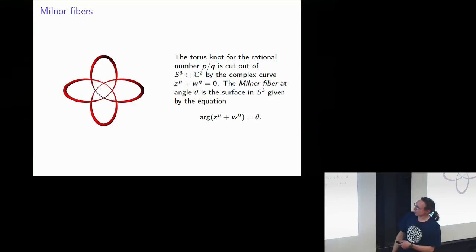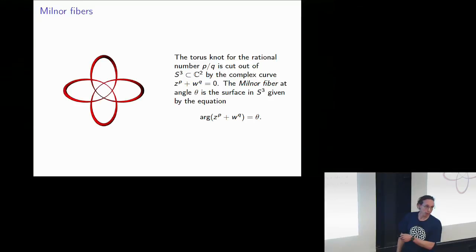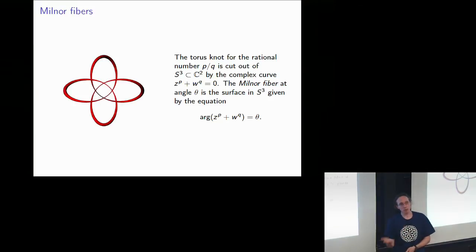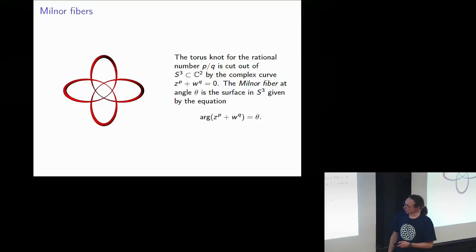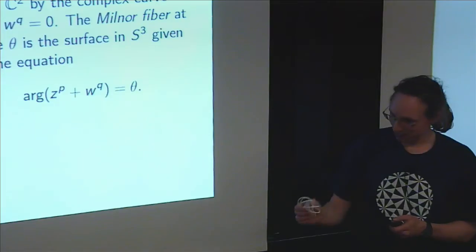We can torture this equation a little bit: take the argument of z^p + w^q and set it equal to θ. This is one real condition, so it gives something two-dimensional in S³. As you vary θ you get a family of surfaces that move through S³ and fill it up. All of these surfaces share the knot as their common boundary, where the argument is undefined.